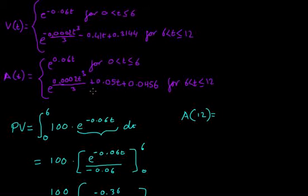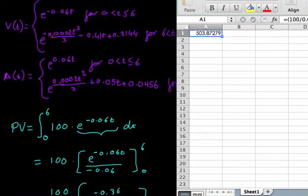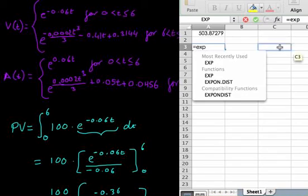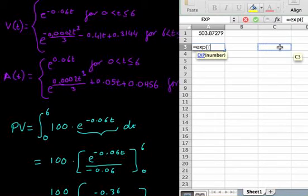All we have to do is sub in 12 anywhere we see a t. I'll just use Excel and figure that one out. That is the exponential of 0.0002 times 12 to the power of 3, all divided by 3, plus 0.05 times 12, then plus 0.456.